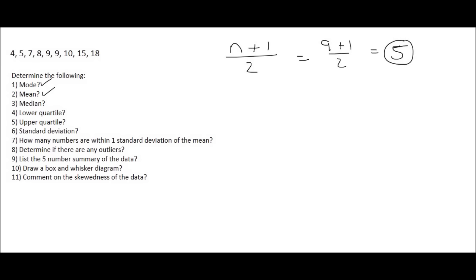Starting from the front, that's position one, two, three, four, five — and there it is. Most people would think you should just divide n by two to get the halfway point, but the maths doesn't work out that way. You have to say n plus one and then divide that by two.